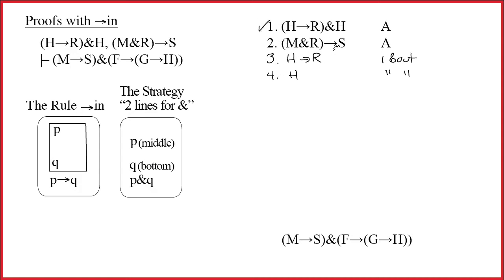Line 2 has an arrow as its main connective. If I had m and r on another line, I could write s. Well, obviously I don't have m and r, and I don't have the pieces to build it. Line 3, if I had h on another line, I could write r. I do have h, so I get to write r. That would be 3, 4 arrow out.